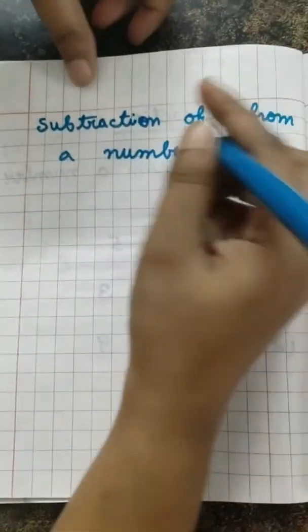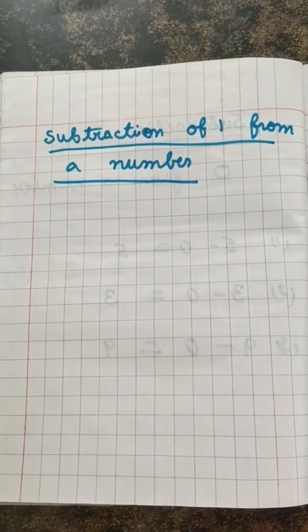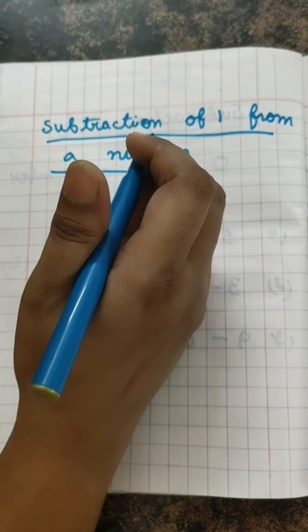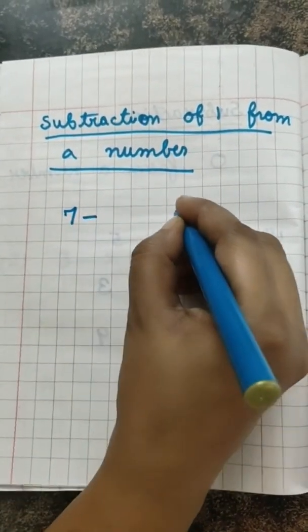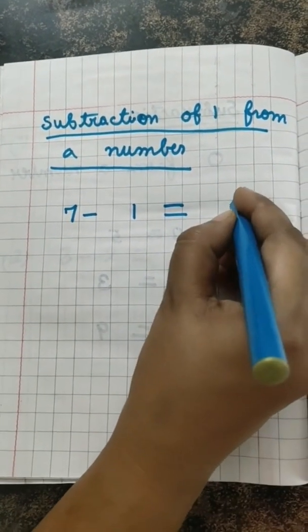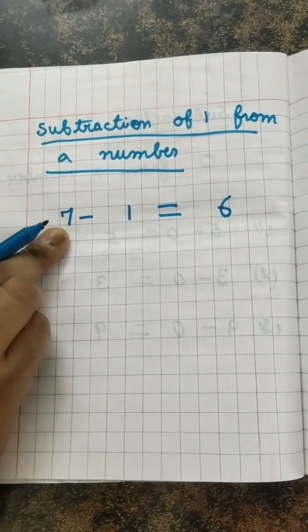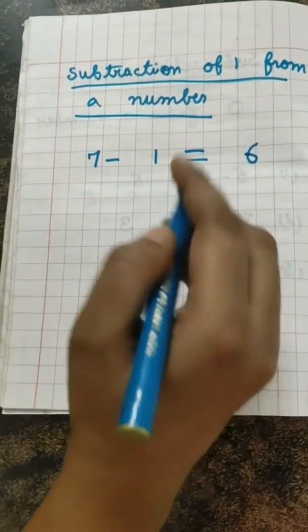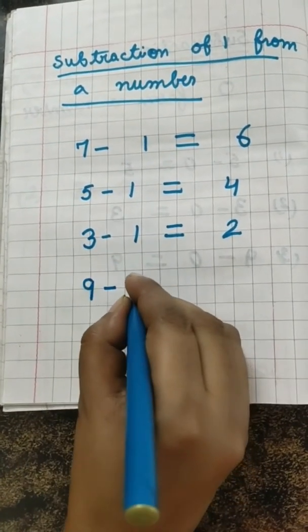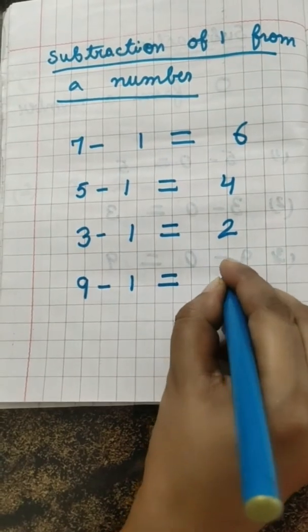Listen children, our second fact is subtraction of 1 from a number. What ma'am is going to say. If a monkey had 7 bananas and the monkey ate 1 banana, then how many bananas are left? Can you tell me? Yes, number 6. The number just before the 7. Suppose number 2, then if I am subtracting 1 from number 9, then what will be the answer? The number before number 9 - what will be the answer? Number 8. Very good, children.